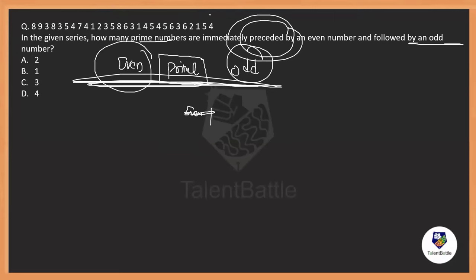We concentrate only on the prime numbers, to avoid wasting time checking all numbers. The primes in the series are: 3, 3, 5, 2, 3, 5, 3, 5, 5, 3, 2, 5, 7. Remember 1 is neither prime nor composite, so we will not consider it. Now for each prime, we check if the number before it is even and the number after it is odd.